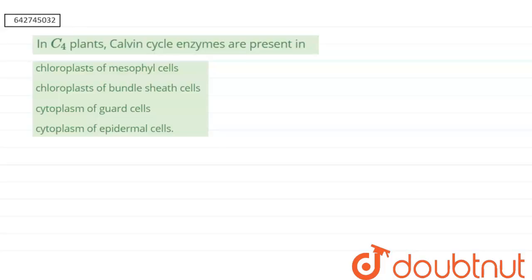Our question says that in C4 plants, Calvin cycle enzymes are present in: first option is chloroplast of the mesophyll cells, second is chloroplast of the bundle sheath cell, third is cytoplasm of the guard cells, and fourth is cytoplasm of the epidermal cells.